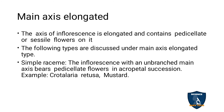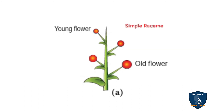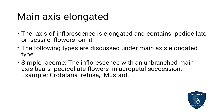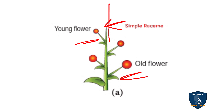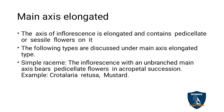In main axis elongated racimose inflorescence, the main axis is elongated and flowers may be sessile or pedicillate. The main axis does not possess any flower at its tip; it continues growing, with the older flower at the base and the younger flower at the top. The first type is simple raceme, where flowers are in acropetal succession. Examples: mustard and Crotalaria retusa.